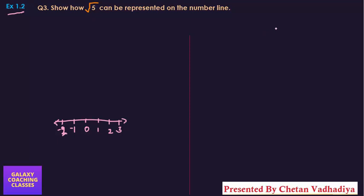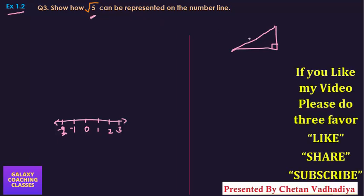First of all, we need to imagine a right angle triangle. By our assumption, we need to bring the length of the hypotenuse to √5. How can we do this? Please listen carefully.